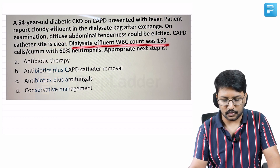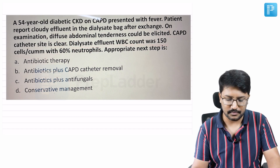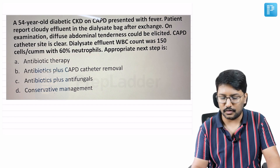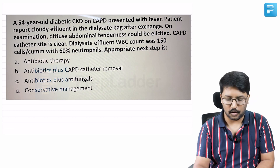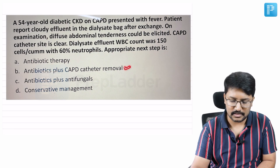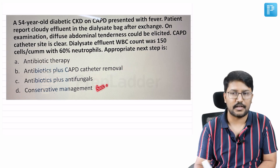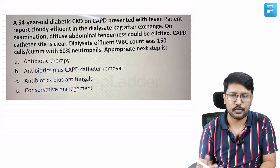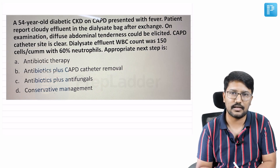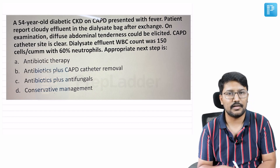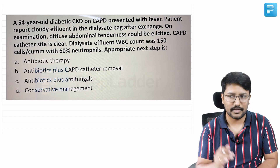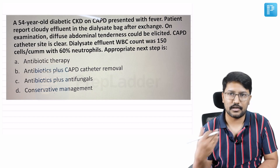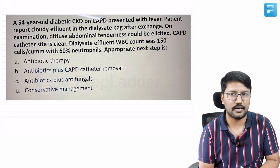Dialysis effluent WBC count is 150 cells per cubic millimeter with 60% neutrophils. The appropriate next step in management options are: antibiotic therapy, antibiotics plus CAPD catheter removal, antibiotics plus antifungals, or conservative management. First, does this patient meet the diagnostic criteria for CAPD peritonitis, and if so, what is the recommended treatment?